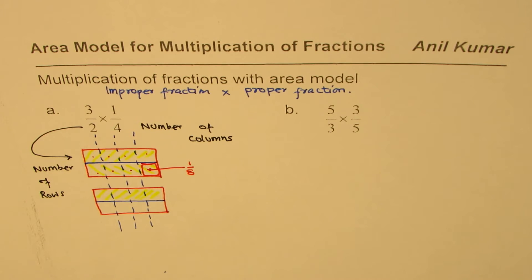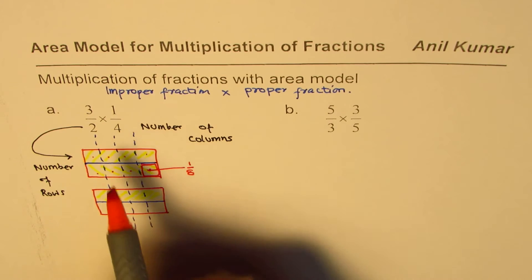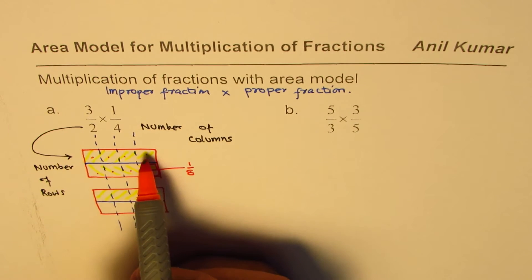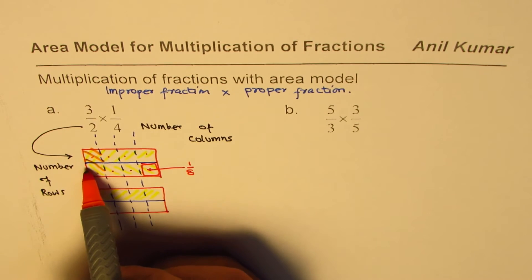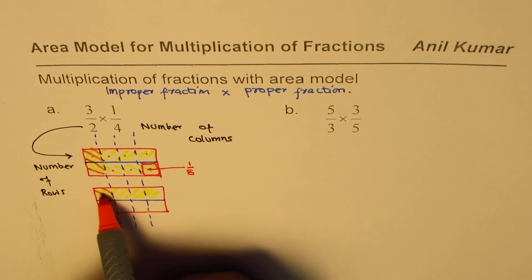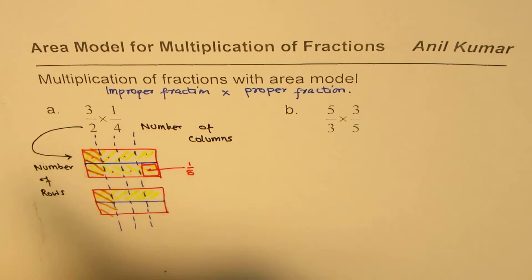Now, we are going to select 1 out of 4. So we have 1, 2, 3, 4 parts. We will select 1 out of 4. So we will select this one. 1 out of 4. Do you see that? So the other fraction, which is 1 out of 4, is the one which I have shaded here in orange.